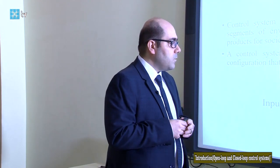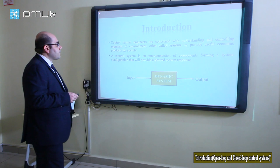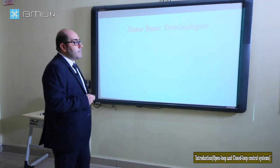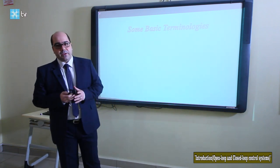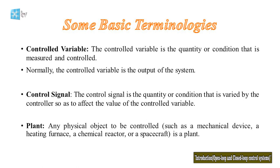This is called a dynamic system. In automatic control systems we work with dynamic systems. Now let's talk about some basic terminologies. The first one is the controlled variable: it is the quantity or condition that is measured and controlled. Normally, the controlled variable is the output of the system.